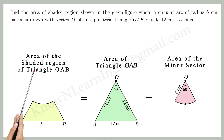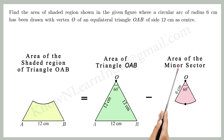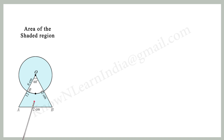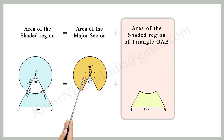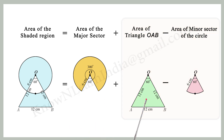That is, the area of the shaded region of triangle OAB equals the area of triangle OAB minus the area of the minor sector of the circle. Now we can find the area of the shaded region: area of the shaded region equals area of the major sector plus area of triangle OAB minus the area of the minor sector of the circle.